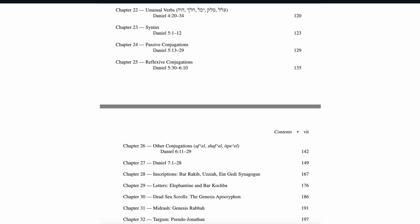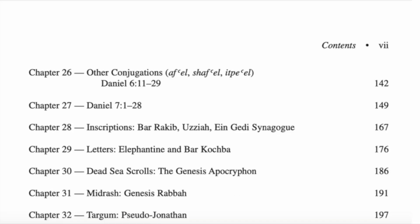So what are the other texts that Greenspan analyzes that are not part of the Hebrew Bible? You'll see on your screen that he includes a chapter on some inscriptions discovered by archaeologists in chapter 28. In chapter 29, he analyzes some letters from Elephantine, Egypt, and the period of the Jewish revolt. In addition, he also analyzes some Jewish texts from the Dead Sea Scrolls, the Midrashim, and the Aramaic Targums — the latter of which is a translation of the Hebrew Bible into Aramaic produced over approximately 1,000 years.